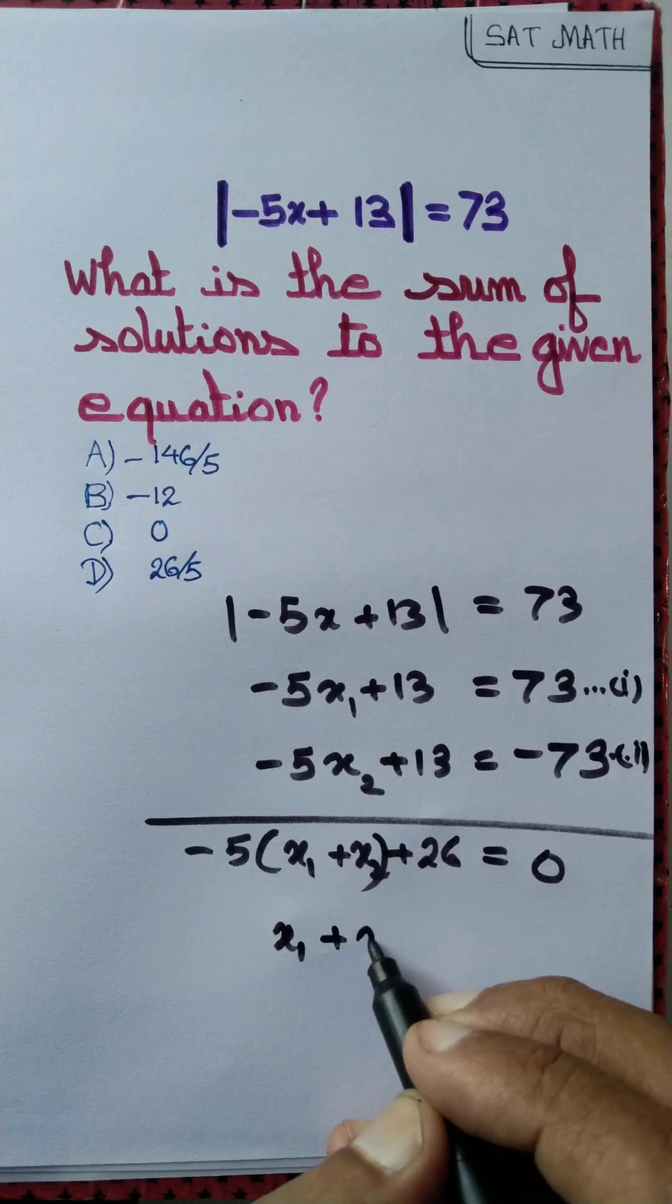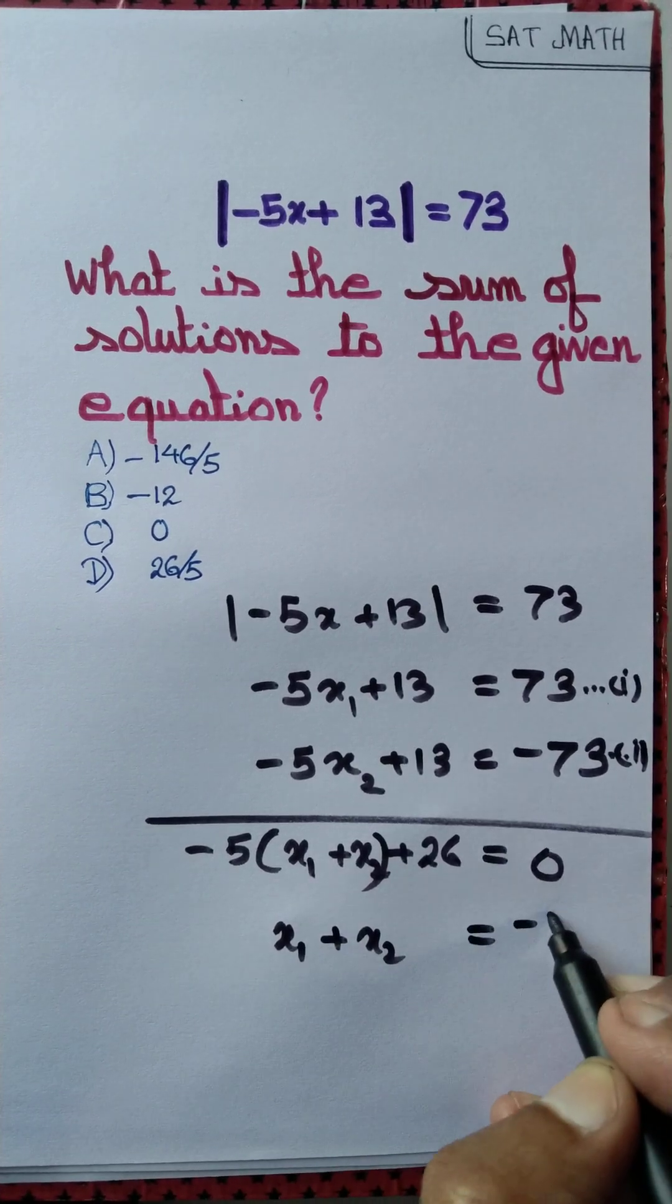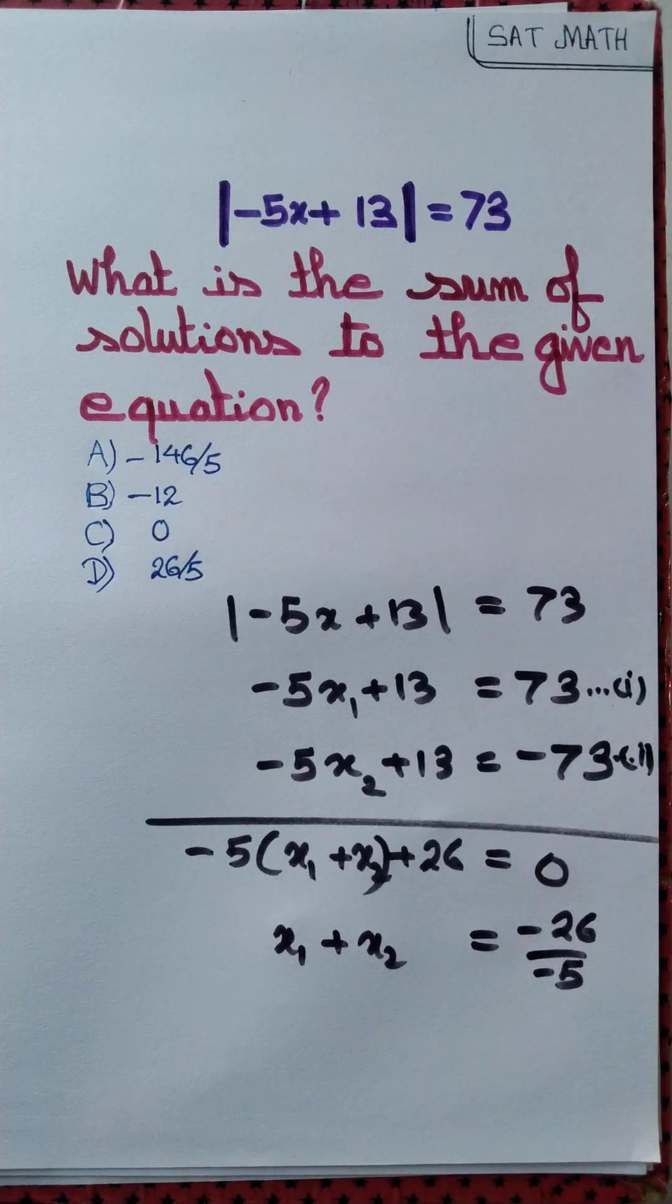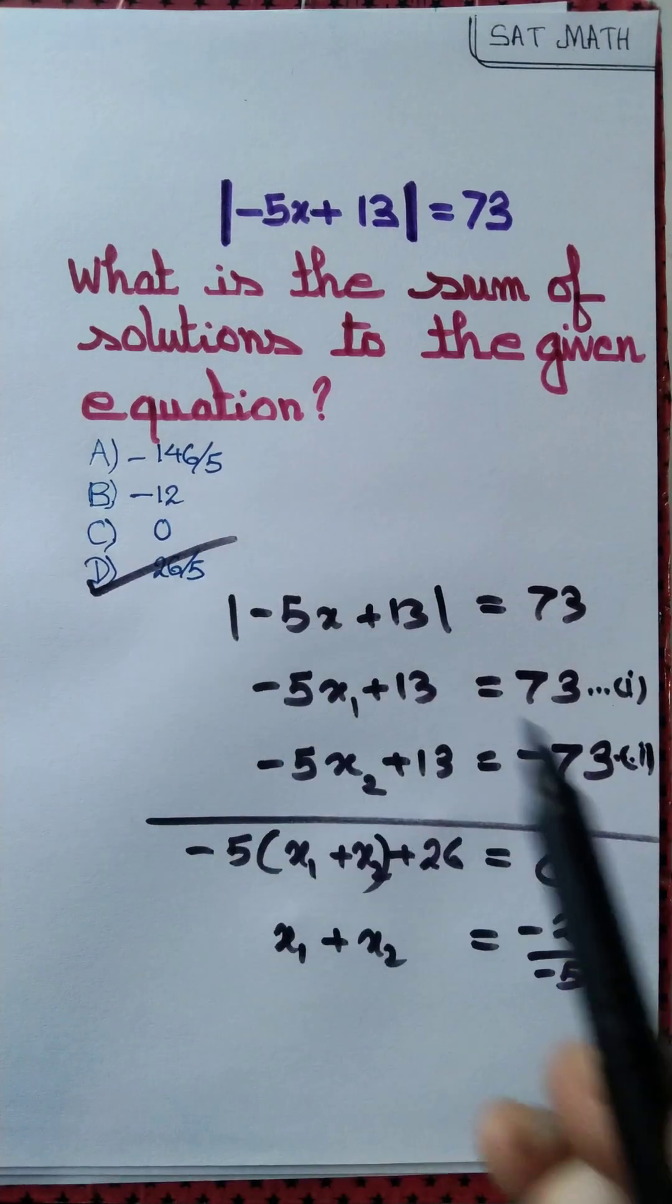So x1 plus x2 equal to minus 26 by minus 5, that's equal to 26 by 5. So the correct option is option D.